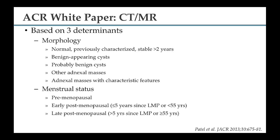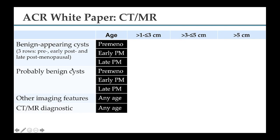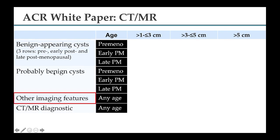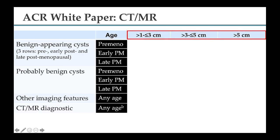For menstrual status, the ACR distinguishes premenopausal, early postmenopausal (within five years since last menstrual period or under 55 years of age), and late postmenopausal (more than five years since LMP or 55 years or older). Lesion size is then added as the third determinant. Benign-appearing cysts are less than 10 cm, round or oval, unilocular, with uniform attenuation or signal, regular or imperceptible wall, no solid area, and no nodules.